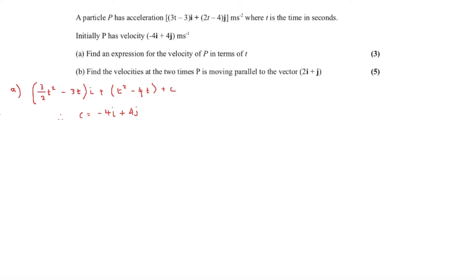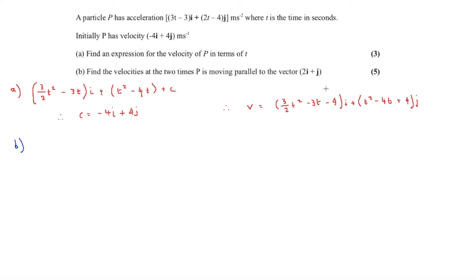Therefore the velocity is v = (3/2 t² − 3t − 4)i + (t² − 4t + 4)j. Part b then asks us to find the velocities at the two times when P is moving parallel to the vector 2i + j.